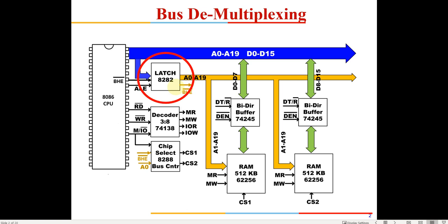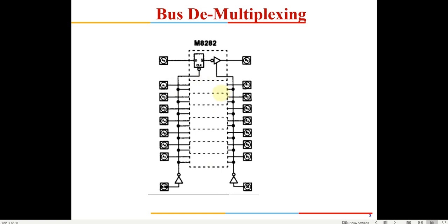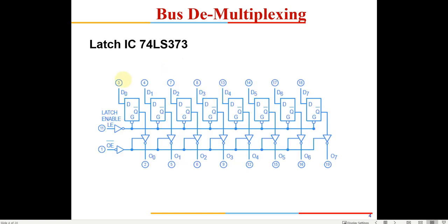In the third latch, there will be some leftover pins — we just leave them open and don't use them. Three such latches are used for demultiplexing. Another IC you can use is the 74373, which uses an SR latch instead of a D flip-flop.